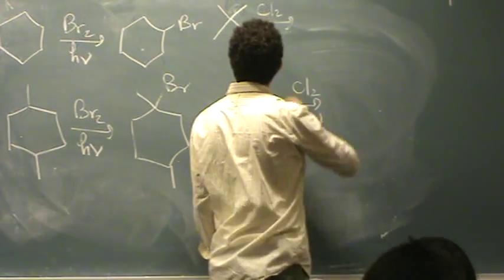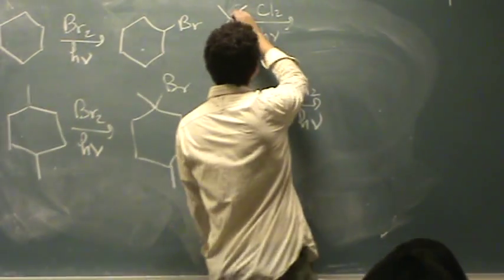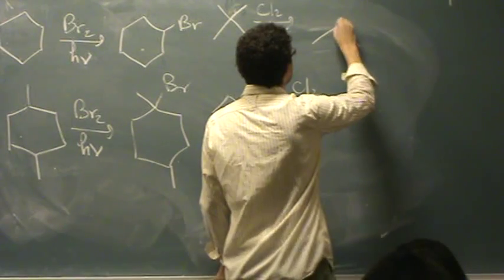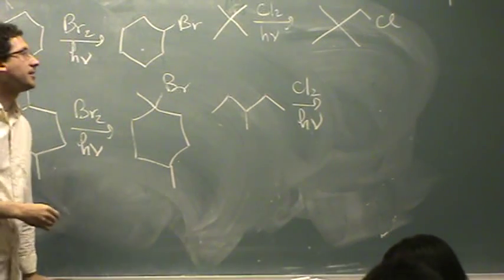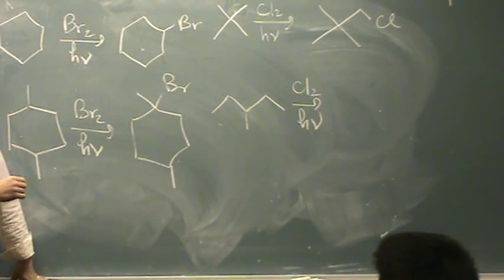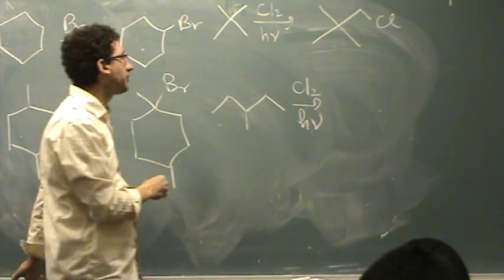This one, where's it going to go? On the outside. In the middle or on the outside? On the outside, because there's no tertiary here. So there's only primaries available. Pick any one that you want and put it there. The main chain would be a propane. So it would be 1-chloro-2,2-dimethyl-propane.